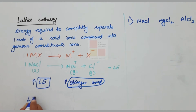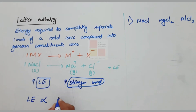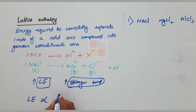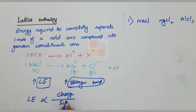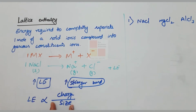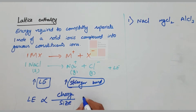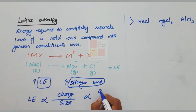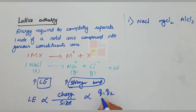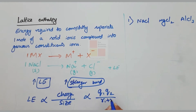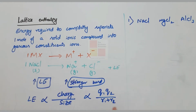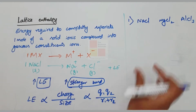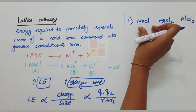Lattice enthalpy is directly proportional to the charge and inversely proportional to the size. The formula is Q1×Q2 divided by R1+R2, where Q1 and Q2 are the charges and R1 and R2 are the radii of the ions.